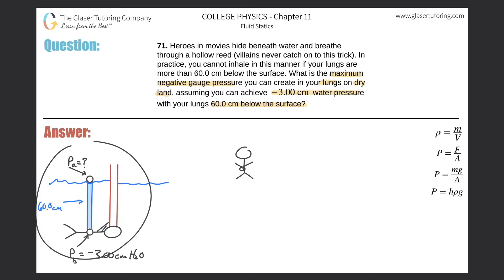So here we have our little diagram, and we realize that when the superhero is 60 centimeters below the surface, inside of his or her lungs there exists negative 3 centimeters of water of pressure. Now this is relative to its immediate external environment.